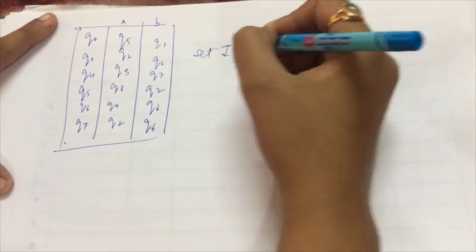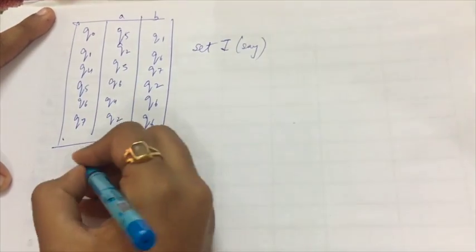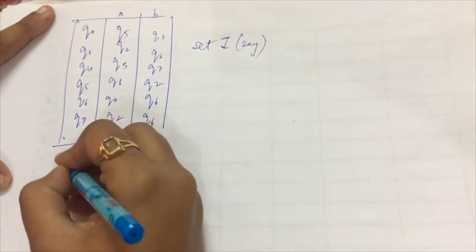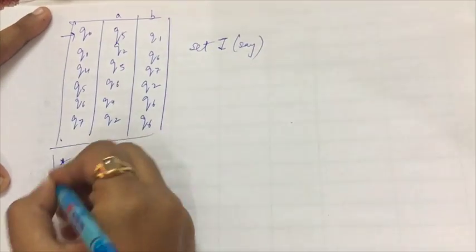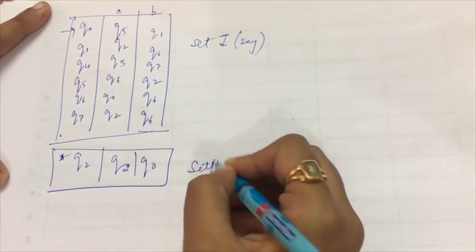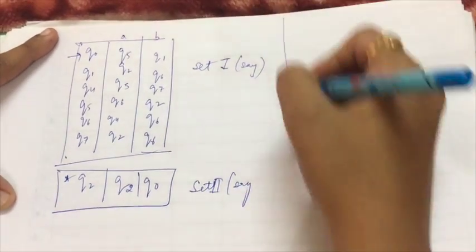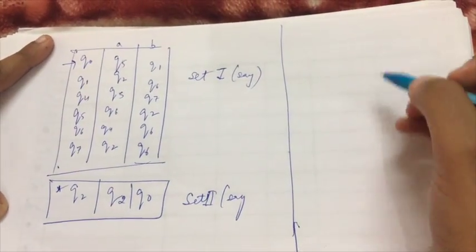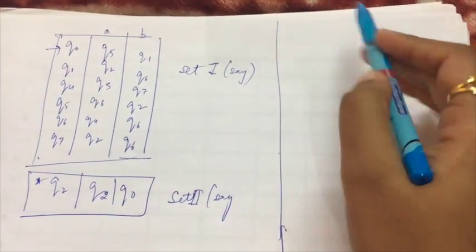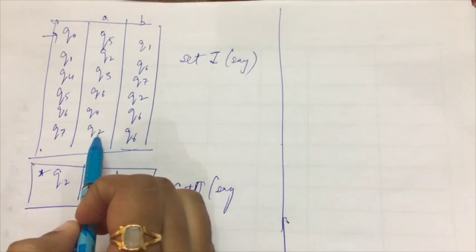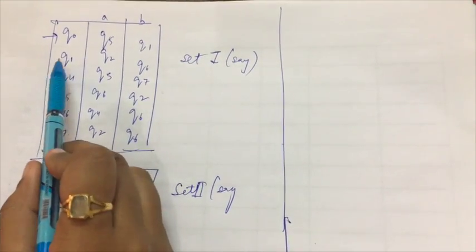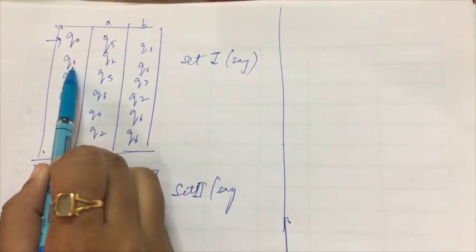This we can say is set one. And this one which comprises of the final states, this is set two. Now we are going to perform certain steps on both the sets individually. What are those steps? We make an observation in set one.